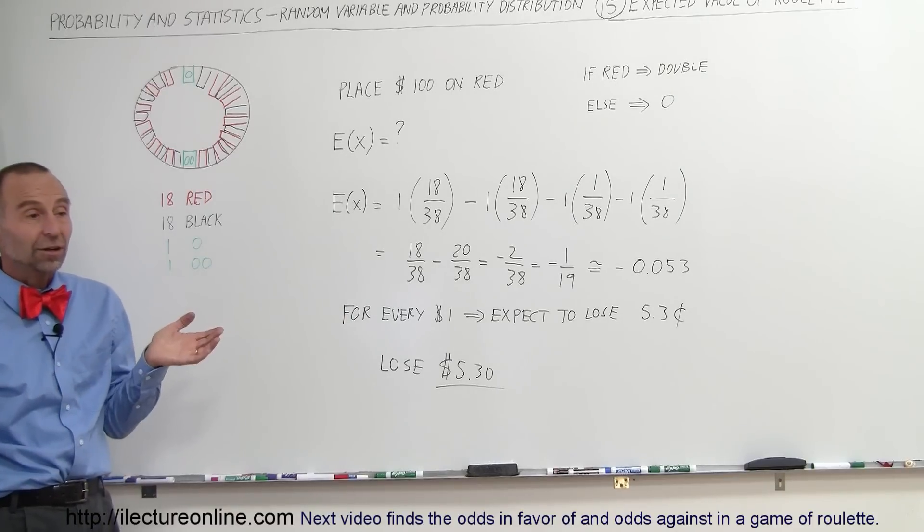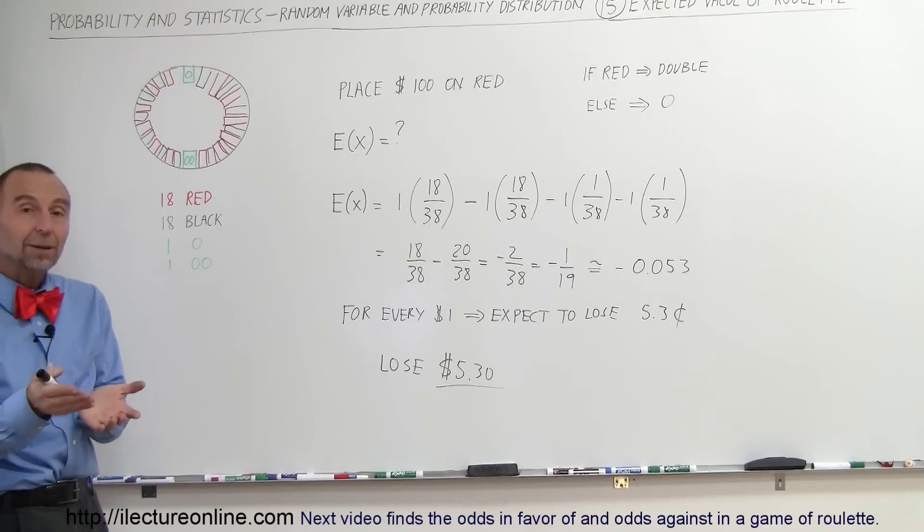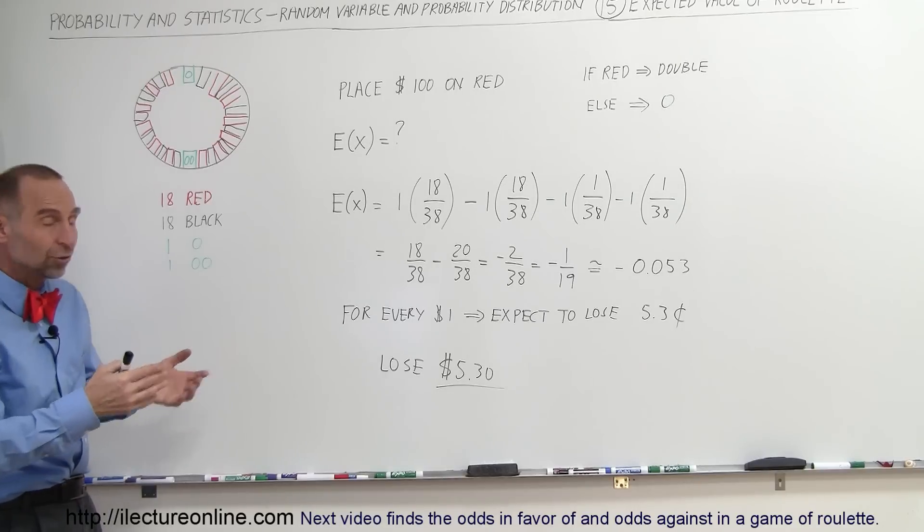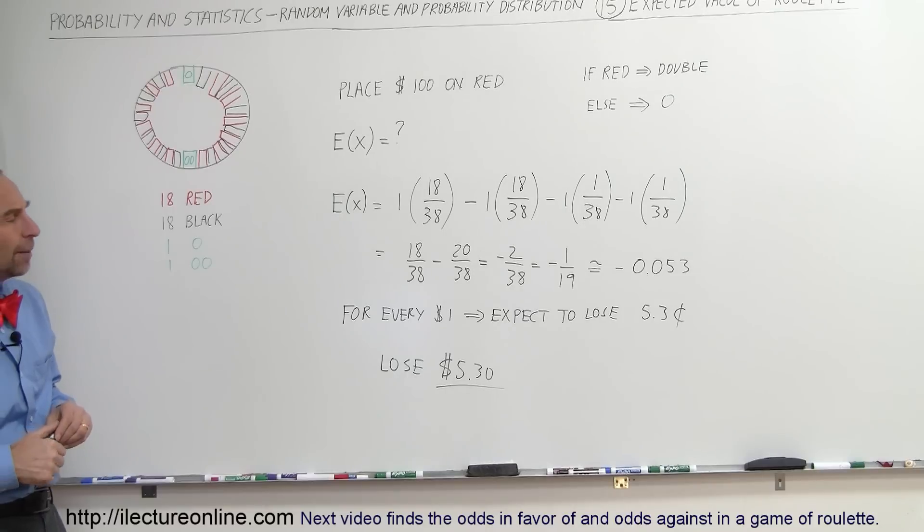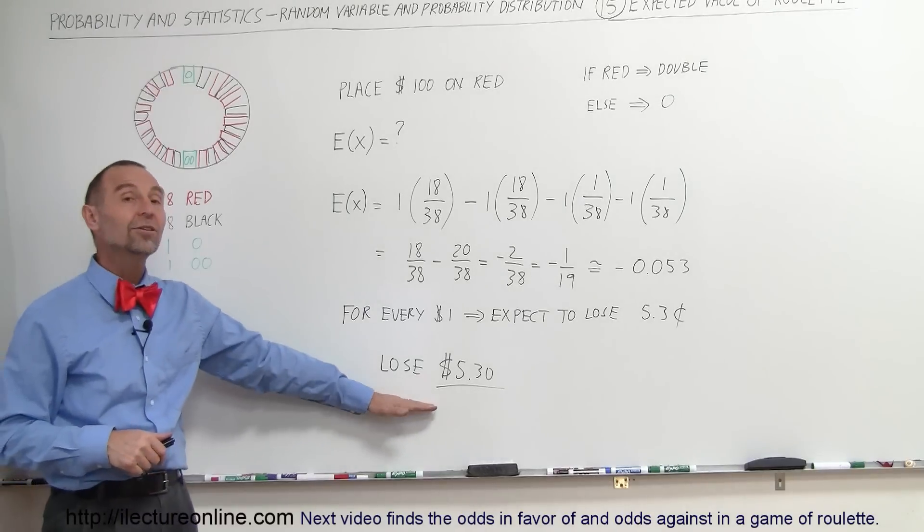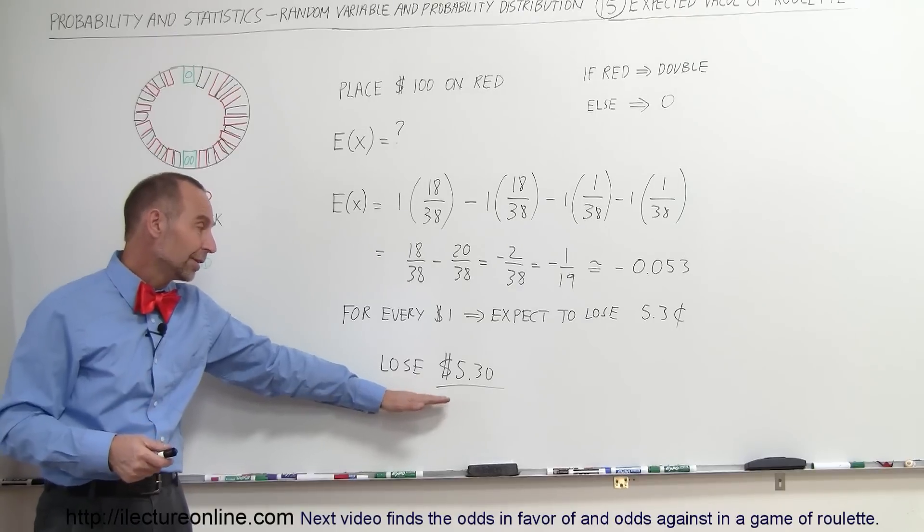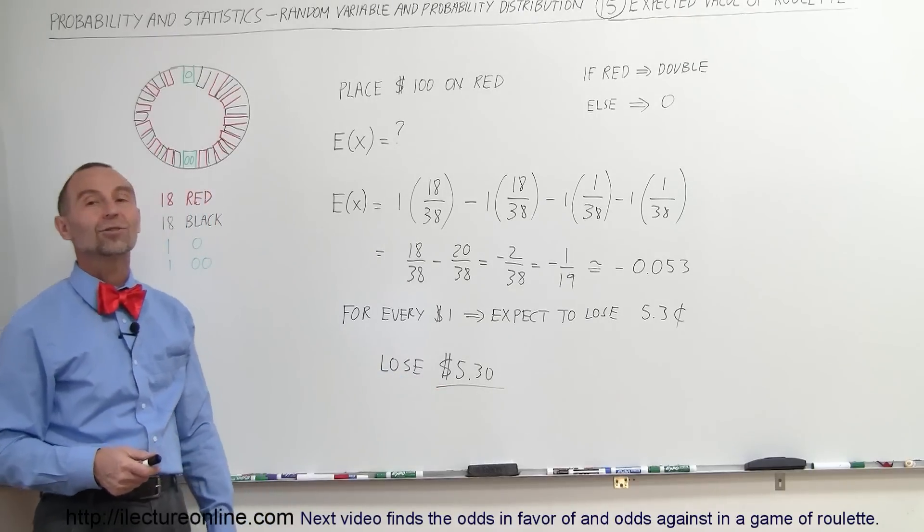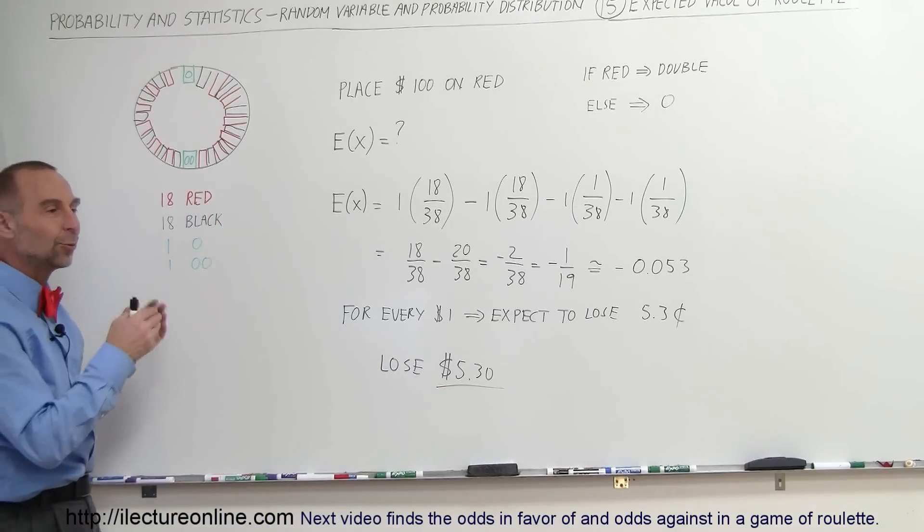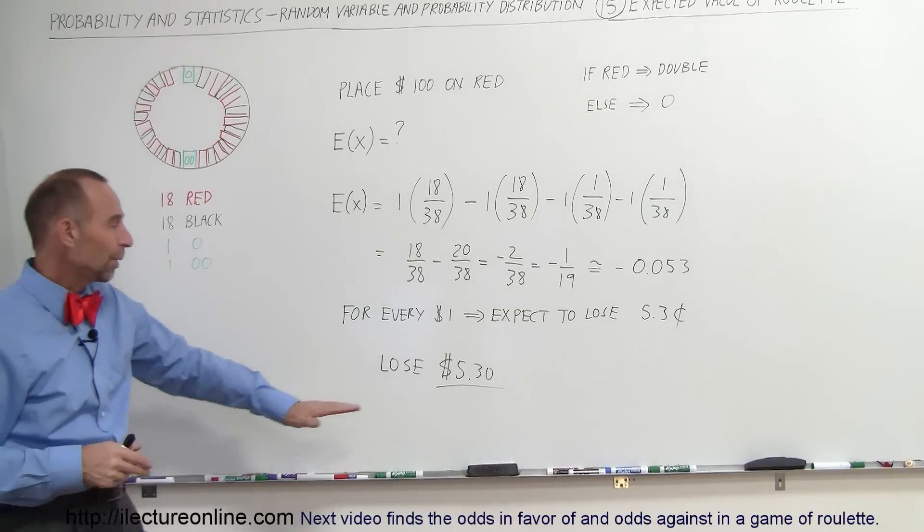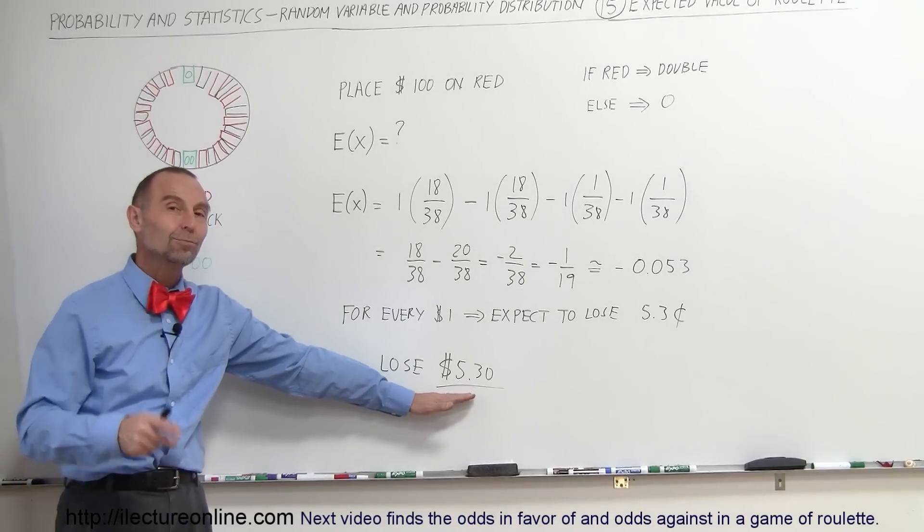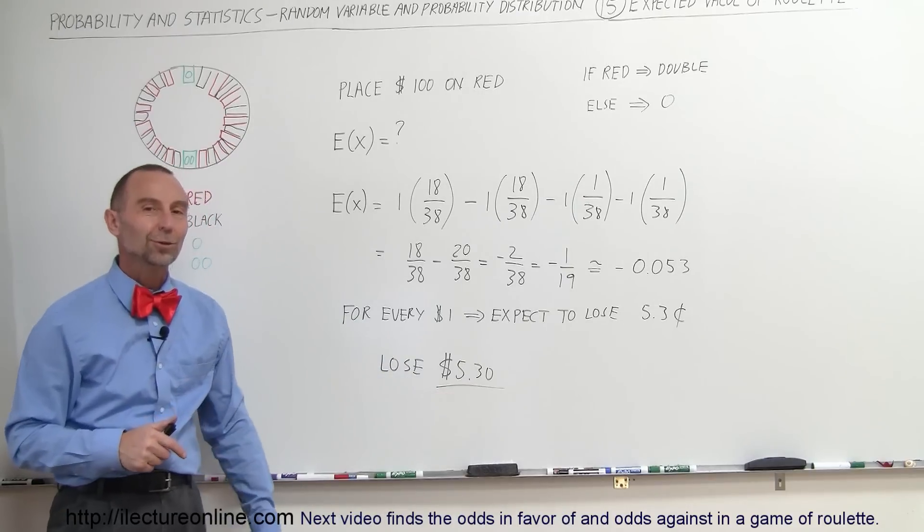So now chances are, if you do it a few times, you may come out ahead, you may win a hundred dollars, two hundred dollars, three hundred dollars and only lose a few times. But if you do it over a long term, let's say you do that a hundred times, the law of averages will tell you that you will lose 530 dollars if you place a hundred dollars on either red or black playing roulette. You do it a hundred times, you'll probably walk away 530 dollars poorer than when you started the evening.